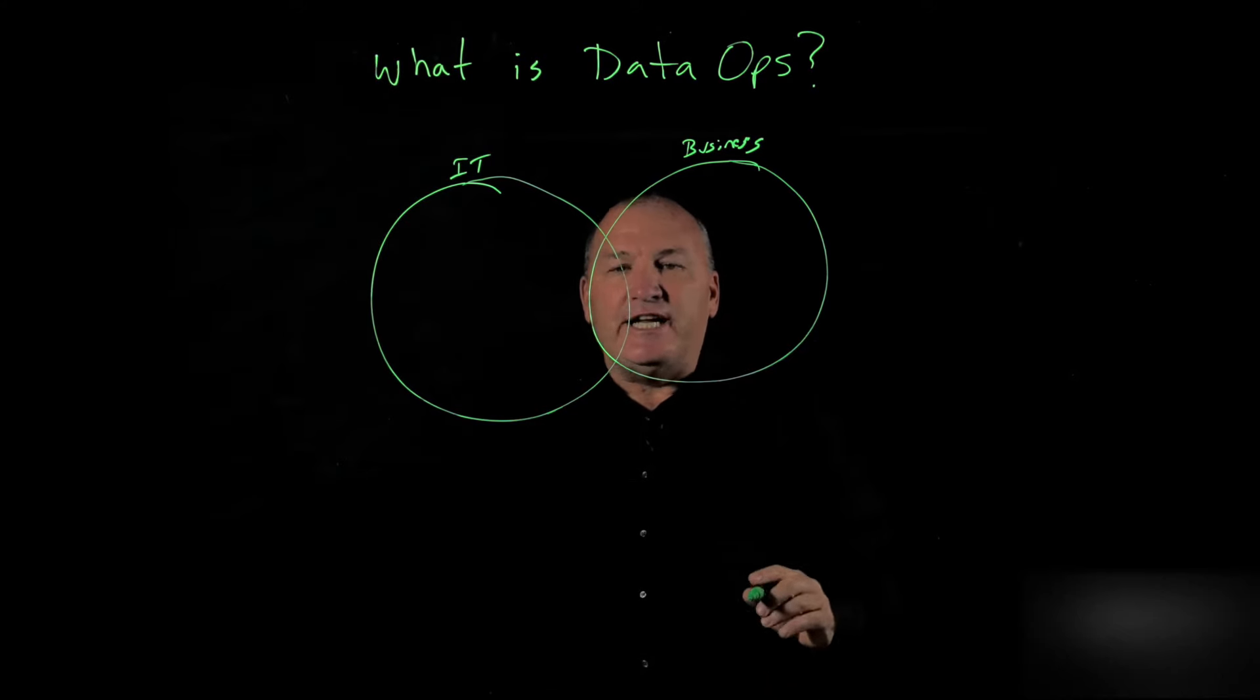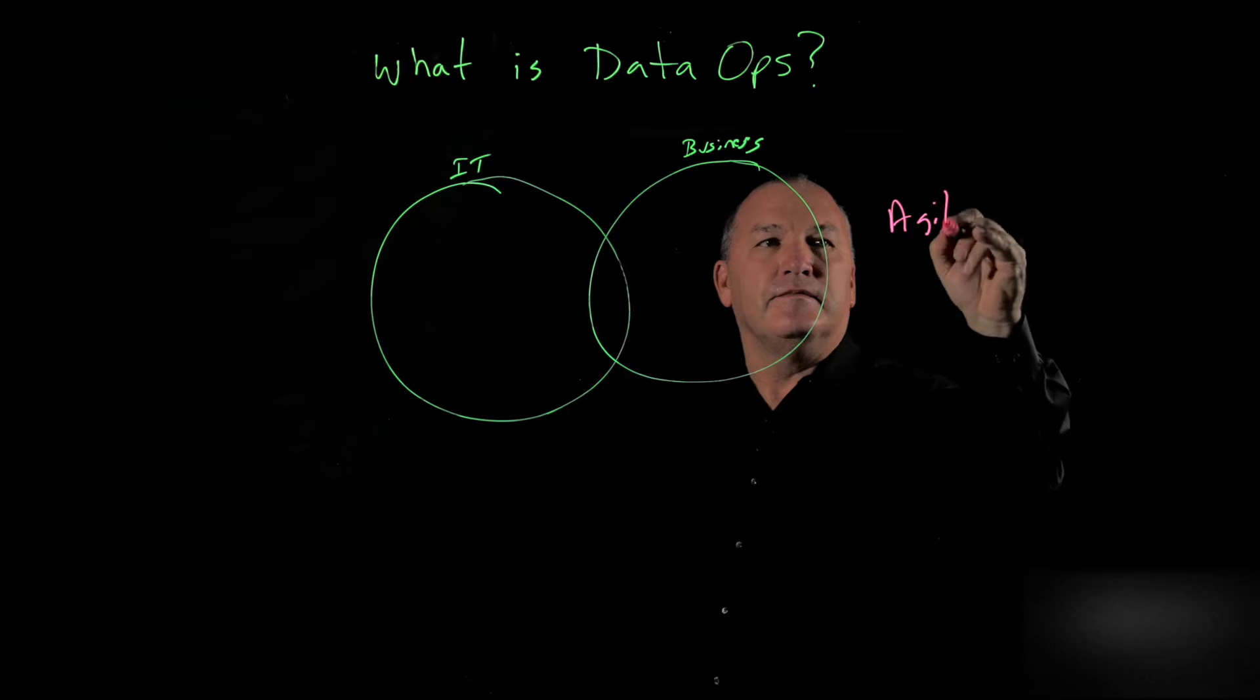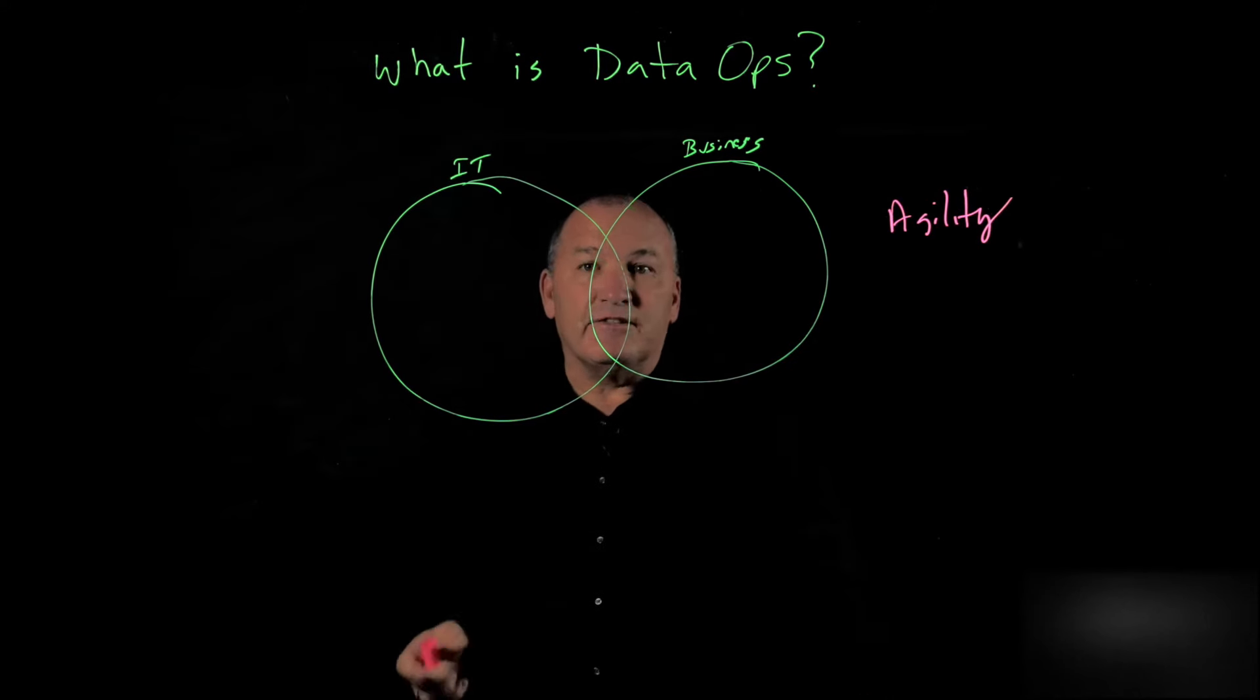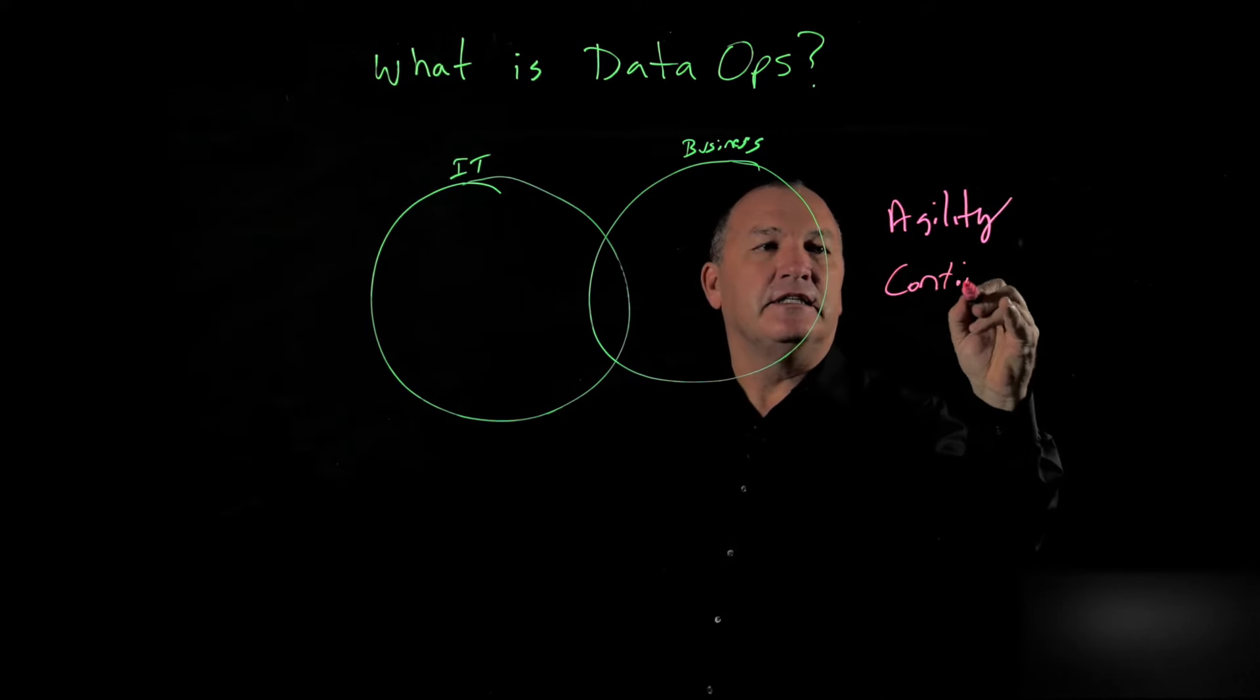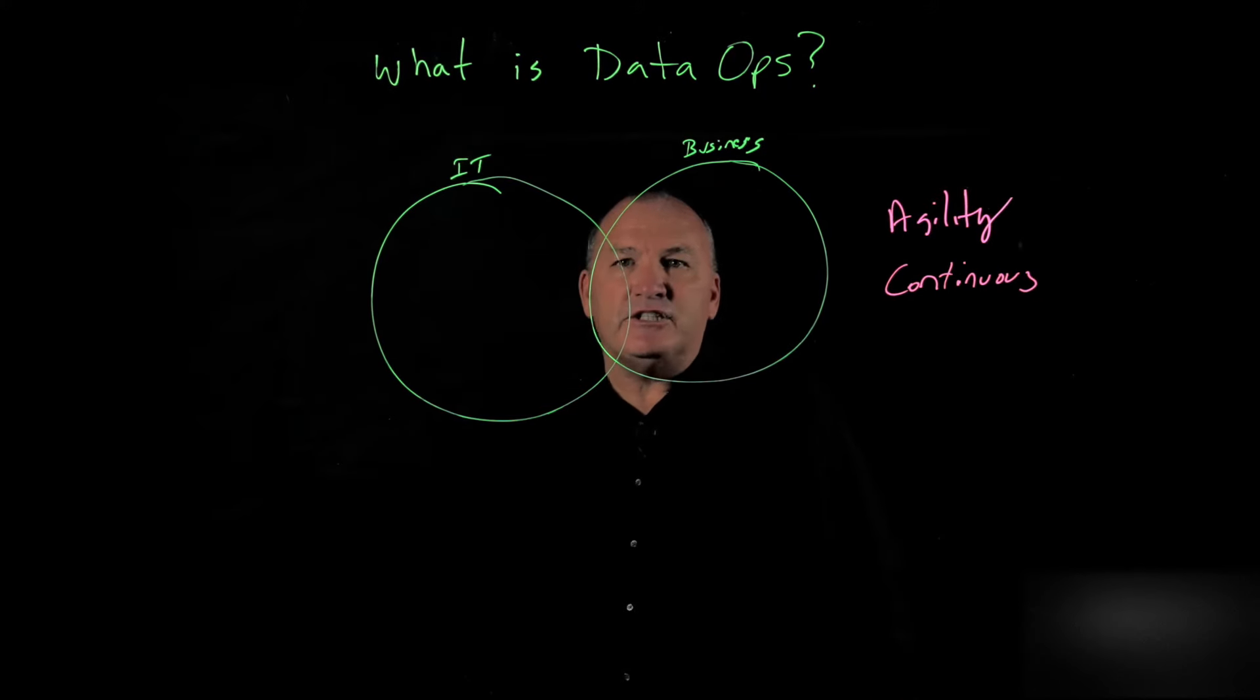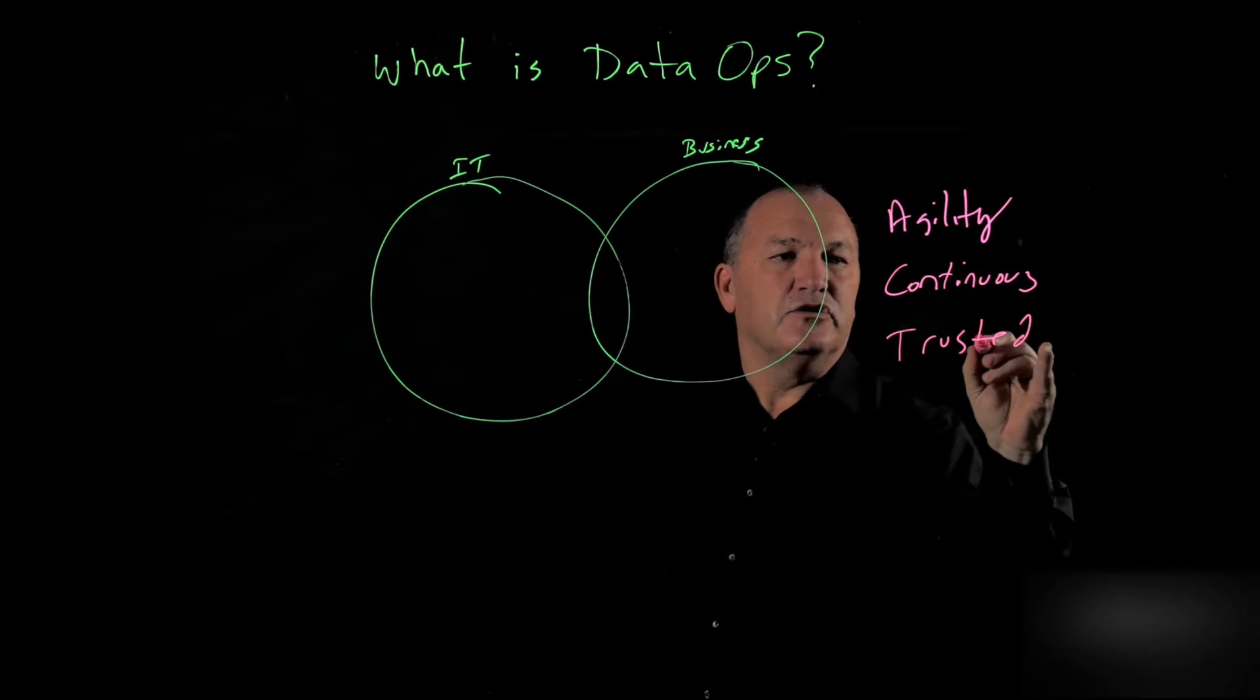So DataOps changes all of that. And the key tenants of DataOps is agility, how to provide more flexibility to deliver data faster in the format that the business user needs. It needs to be continuous, continuous delivery, continuous integration of data, providing fresh data to the business. And it needs to be trusted.